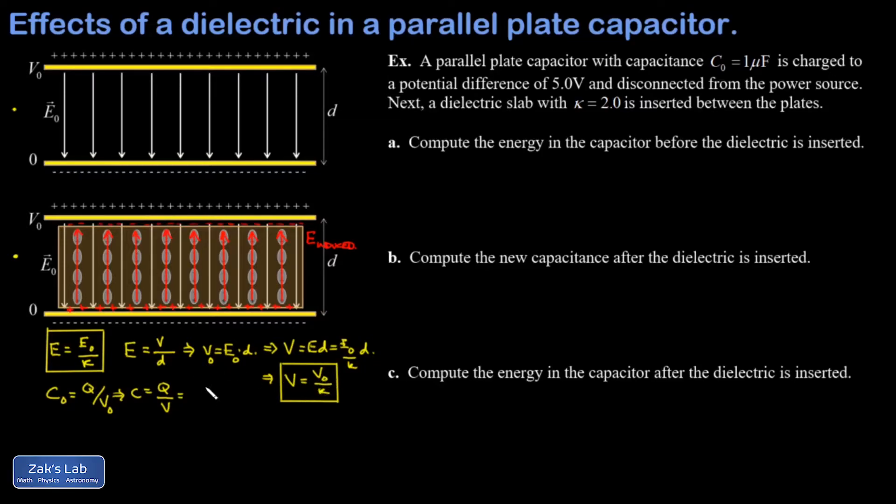So when I divide by V naught over kappa, that's the same as multiplying by kappa, and I end up with a factor of kappa out in front of Q over V naught, which is the original capacitance. So I see that my capacitance is increased by a factor of the dielectric constant.